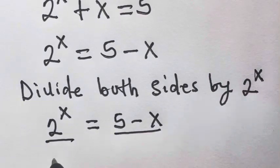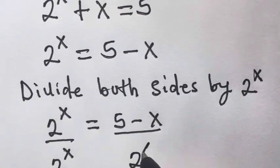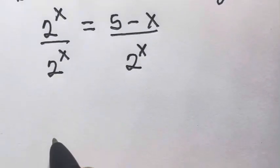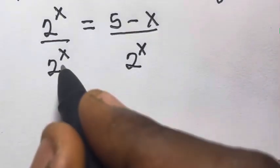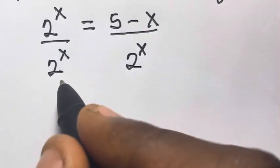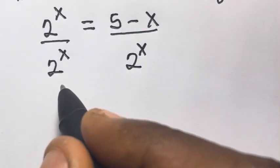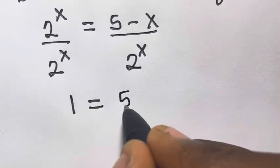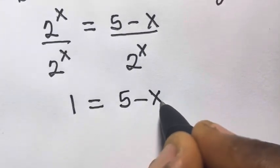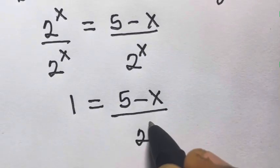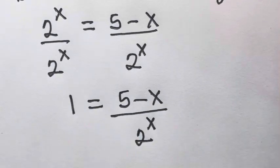We divide by 2 raised to power x on both sides. So 2 raised to power x divided by 2 raised to power x gives us 1, and we have 1 equals 5 minus x divided by 2 raised to power x.